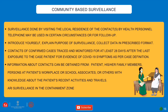Community-based surveillance is done by visiting the local residents of contacts by health personnel. Your transport details are saved with websites for about 15 days, enabling contact tracing. Health workers visit homes, collect contact details including mobile numbers, and follow up by phone. Telephone may be used in certain circumstances for follow-ups.